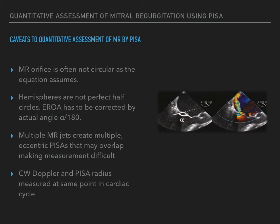For instance, a perfect half-circle hemisphere would have an angle of 180 degrees and the effective regurgitant orifice area would not be affected, as 180 divided by 180 equals 1. Multiple mitral regurgitant jets are a challenge, as the varying flow convergence areas are eccentric, leading to overlap and impingement on each other. It is also assumed that continuous wave Doppler of the MR jet and the PISA radius are calculated at the same point of the cardiac cycle.